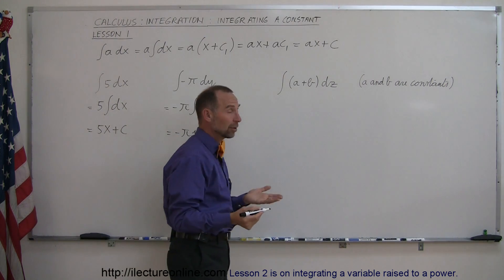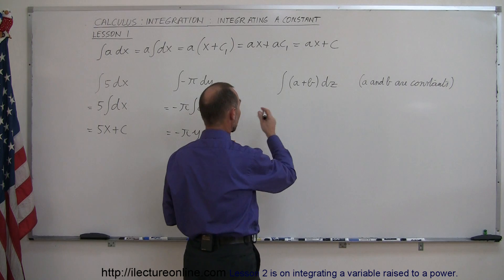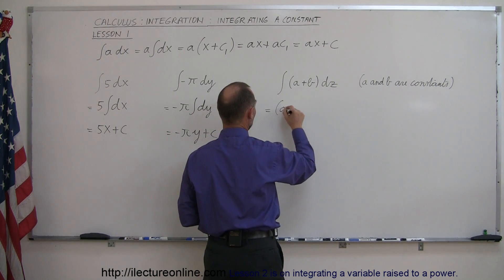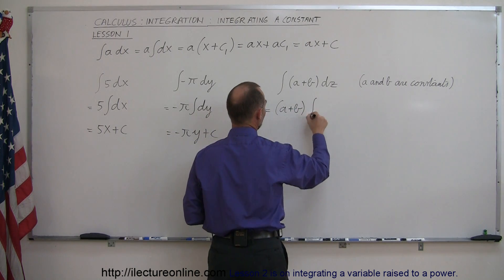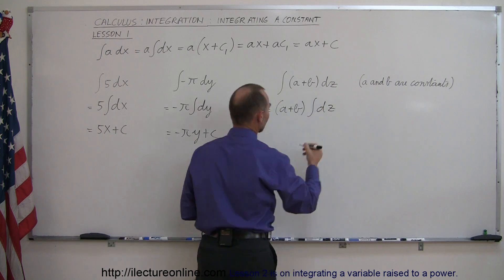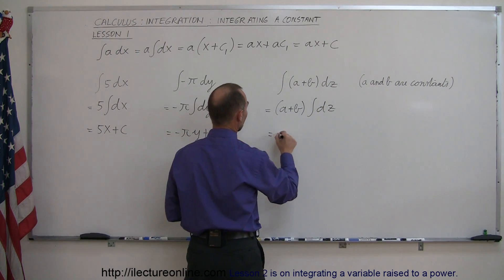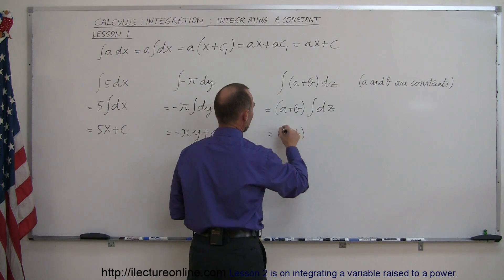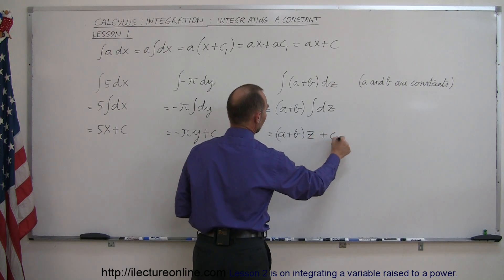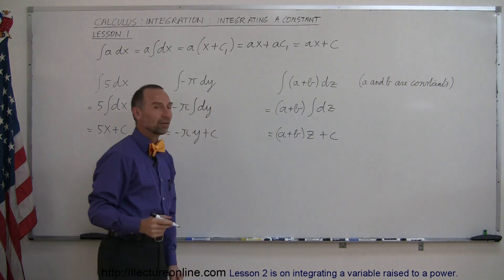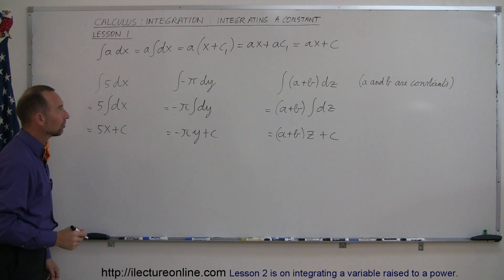And finally, let's say that a and b are two constants that are added together. We can move that outside the integral sign. This can be written as a plus b times the integral of dz. The integral of dz is z plus a constant. So this becomes a plus b times z plus a constant of integration. That's how you integrate a constant.